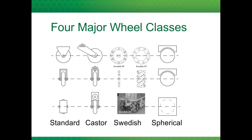Next we have a Swedish wheel, which comprises a bunch of rollers mounted around the rolling axis of the wheel. These rollers are at an angle to the wheel plane, and if that angle is 45 degrees it will look like shown here. You can also have a 90 degree angle, and that's called a Swedish 90. The fourth type is a spherical wheel, and these are typically not powered, but they can be powered.